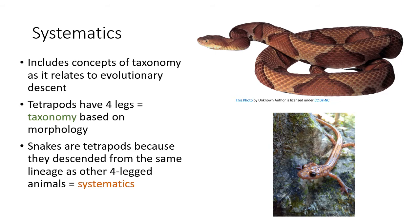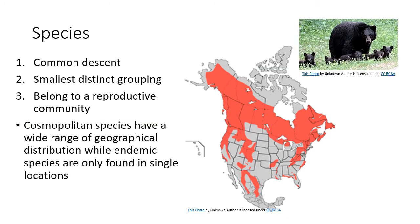A species needs three things for its definition: common descent — meaning this group of individuals all came from a single origin, a single population, or a single mating pair. It is our smallest distinct grouping in the taxonomic hierarchy, and those belonging to a species belong to a reproductive community, which includes asexual organisms as well. A cosmopolitan species is one found throughout the world — black bears, for example, are found throughout the Northern Hemisphere.